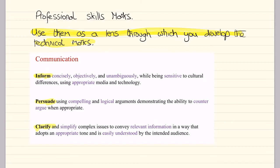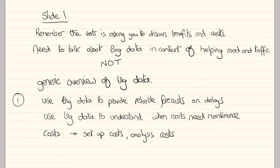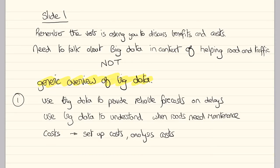Quick reminder: eight technical marks, two slides, four marks each, ten minutes each. Looking at slide one, the verb is asking me to discuss benefits and costs. Be very careful here that we talk about big data in context. A bad answer would just talk about big data generically — discussing volume, velocity, variety — and it would get zero marks. We need to talk about big data in the context of helping road and traffic management.